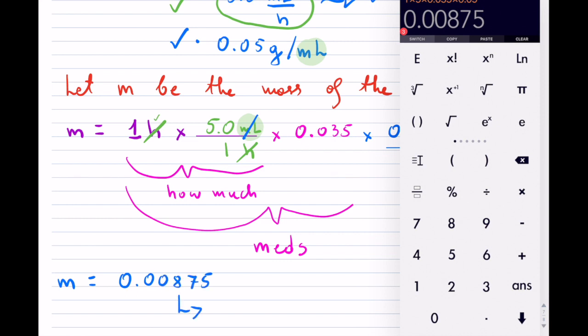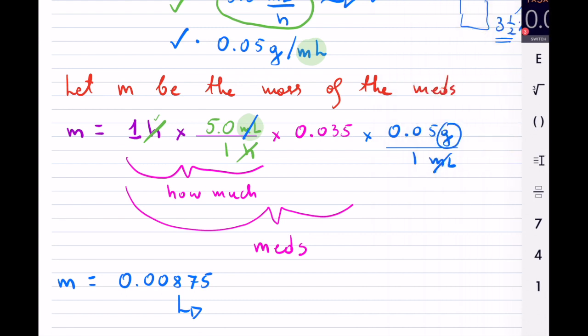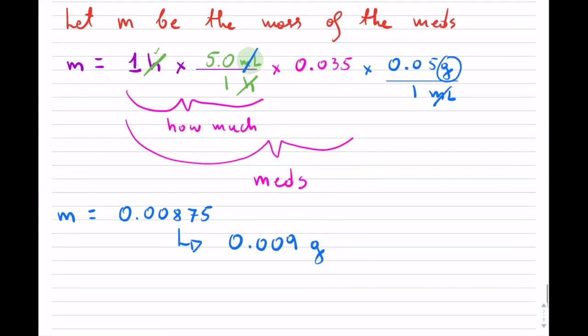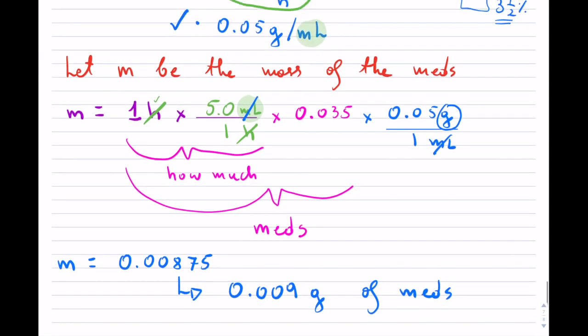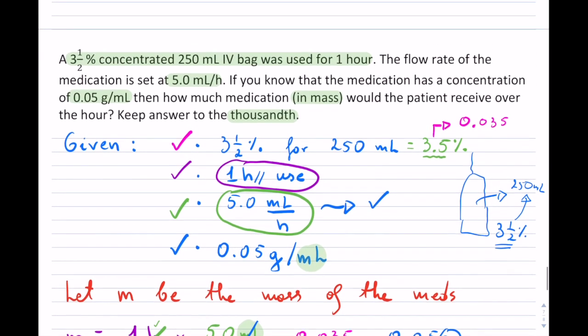But they want me to round this to the thousandth. So rounding to the thousandth, it's only going to turn out to be grams of meds. And that completes this particular question.